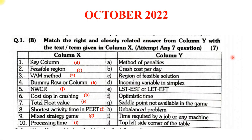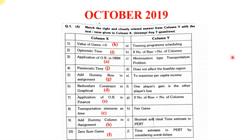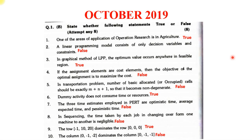After October 2022, the next paper is October 2019. The very first question was Match the Columns, the answers for which have been marked — you can go through it and take a screenshot. The next question in October 2019 was State Whether True or False. Again, the questions with answers have been marked — you can go through it and take a screenshot.